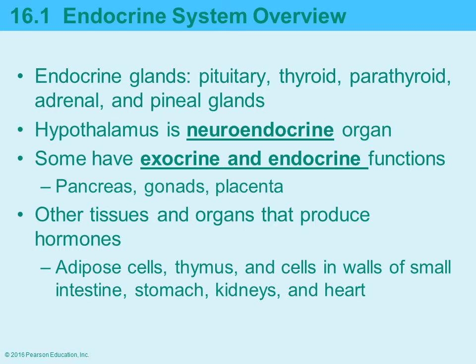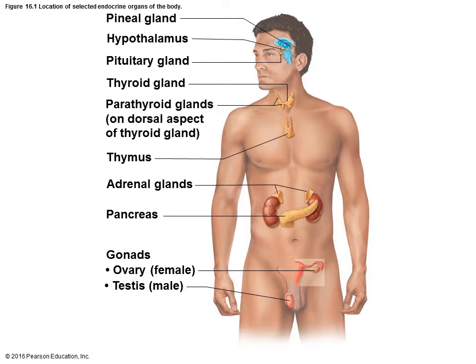Certain cells associated with the small intestines, stomach, kidneys, and the heart can also produce hormones. This diagram shows where the various endocrine organs are located within the body — several glands are in the brain and then in the thoracic cavity and abdominal-pelvic cavities.